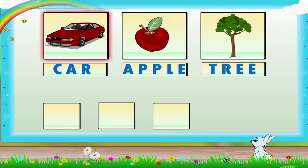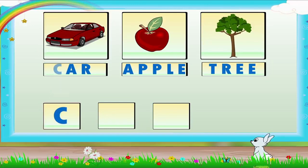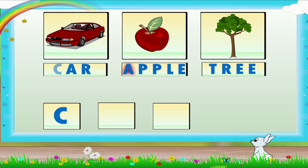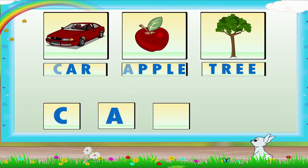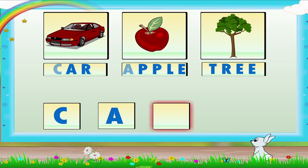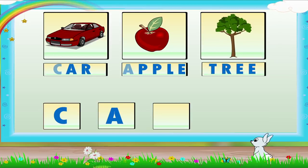Let us put C in the first square. Which letter will you put from the word apple? Put A in the second square. Good! Now, which letter will you place in the third square? The first letter from the word tree is T. Good!